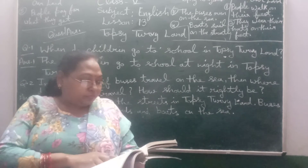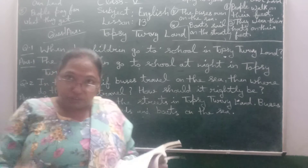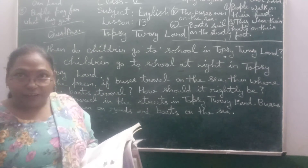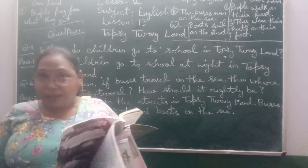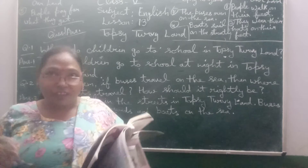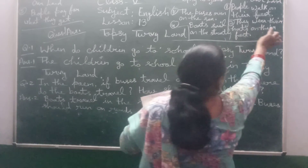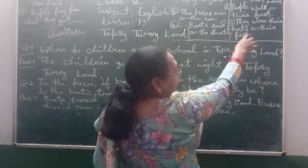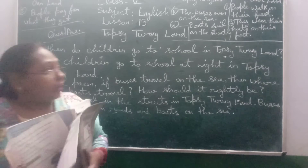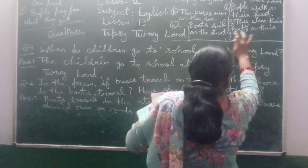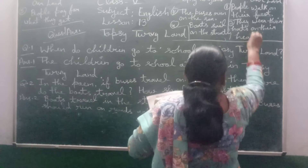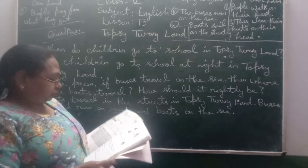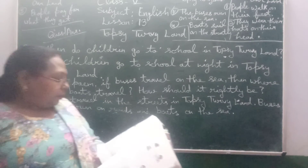The third sentence: in Topsy Turvy Land, people wear their hats on their feet. But in our land, we do not do this — we wear hats on our heads and shoes on our feet. That is the fourth comparison point.